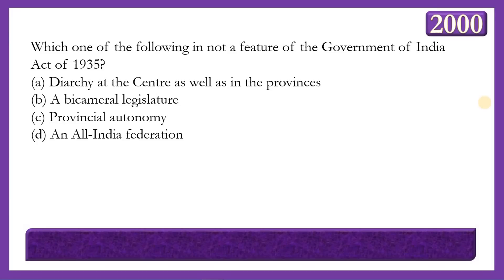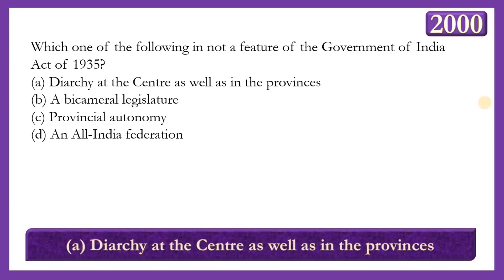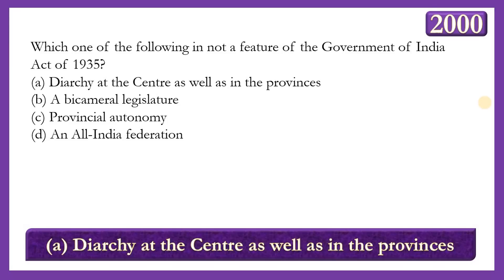The first question, asked in the year 2000: Which one of the following is NOT a feature of the Government of India Act of 1935? Options: hierarchy at the center as well as in the provinces, a bicameral legislature, provincial autonomy, or an All India Federation. The correct answer is option A — hierarchy at the center as well as in the provinces — because hierarchy was introduced only at the center and not in the provinces. Hierarchy in provinces was introduced through the Government of India Act 1919, not 1935.